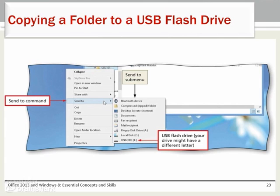Occasionally you may need to copy a folder from one location to a flash drive to access at another location. To copy a folder from your computer to a flash drive, insert a USB flash drive in an available USB port on the computer. Click the File Explorer app button on the task bar to make the folder window the active window. Navigate to the location of the folder you wish to copy. Press and hold or right-click the folder to display a shortcut menu. Tap or point to Send, then tap or click the USB flash drive to copy the folder to the USB flash drive.